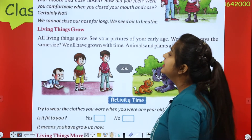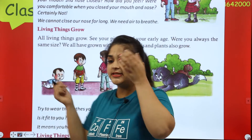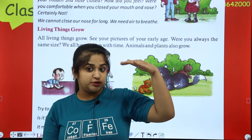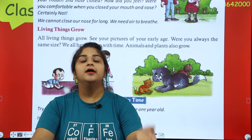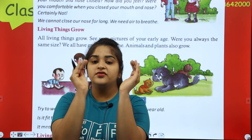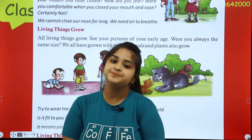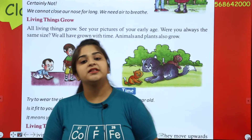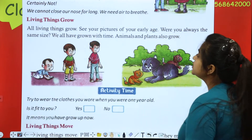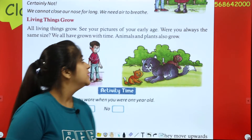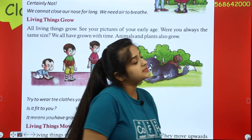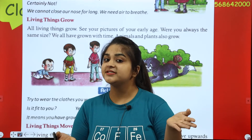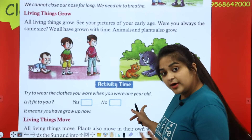The third feature is living things grow. All living things grow. If you see your child's picture from your early age, you can see how you have changed. Were you always the same size? We were smaller, then we started eating food and we grew up.